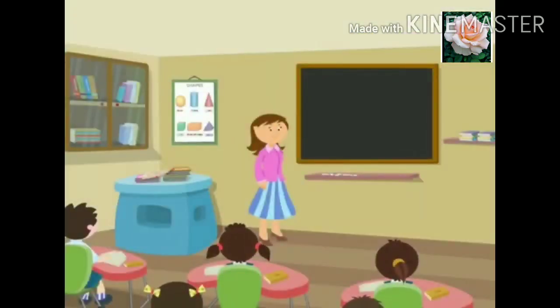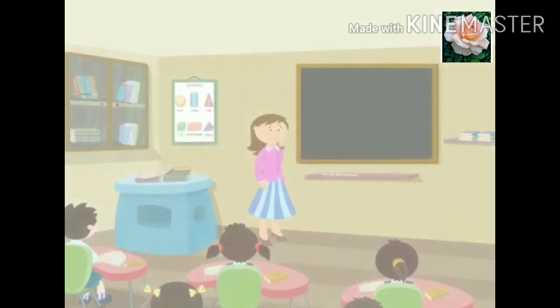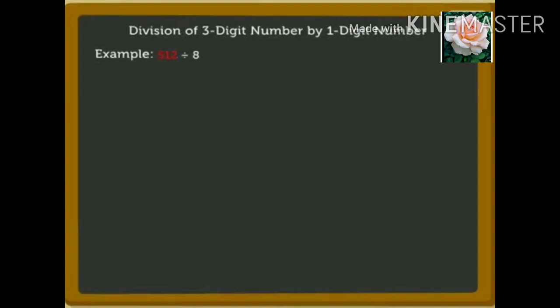Children, today I will teach you division of 3 and 4 digit numbers by 1 digit number. So, let us begin. Divide 512 by 8. There are a few steps to simple division. Let us see these steps while finding the quotient for 512 divided by 8.